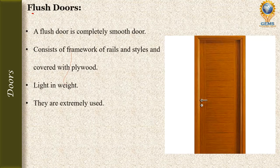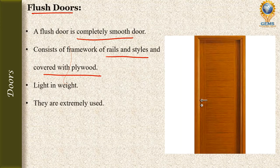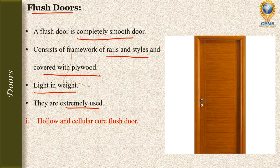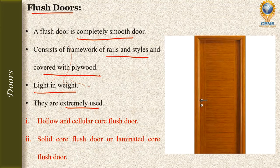The third type is the flush door. A flush door is a completely smooth door consisting of a framework of rails and stiles covered with plywood on the outer face. These doors are light in weight and are extremely common in construction today. Flush doors are of two types: hollow and cellular core flush doors, and solid core or laminated core flush doors.